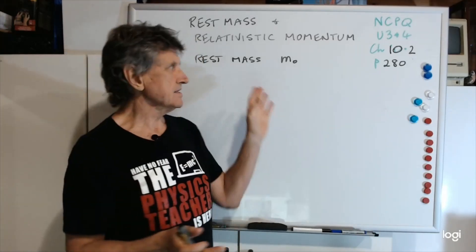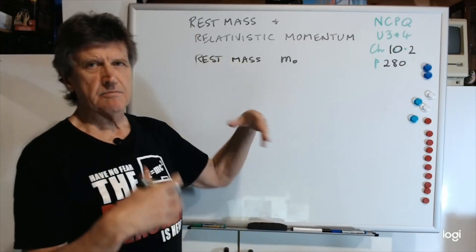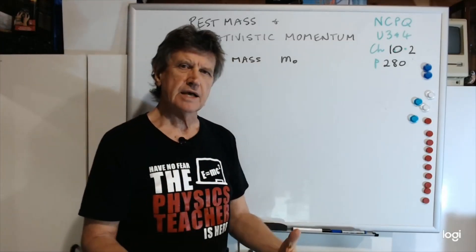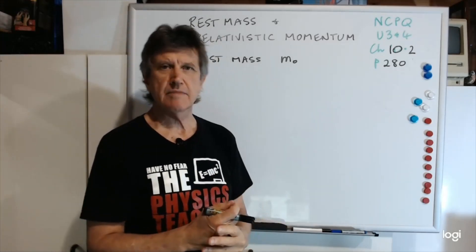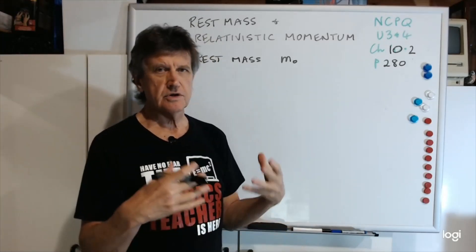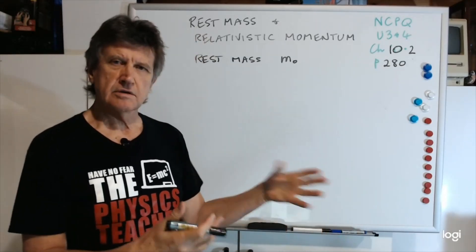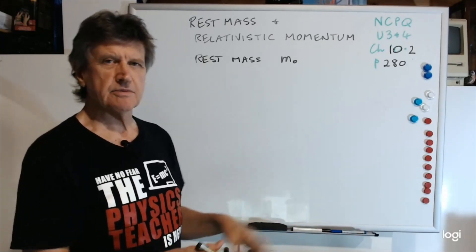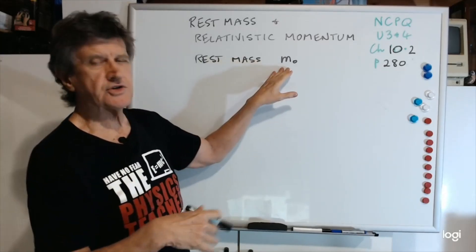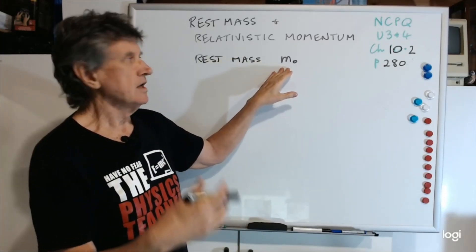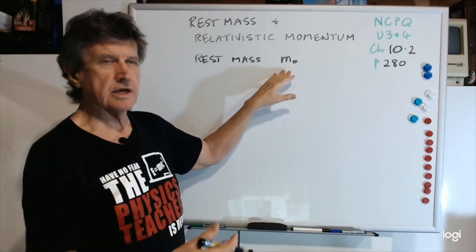Relativistic mass is not something in the syllabus. They use the term rest mass, but there is no change in mass when it moves at a higher speed. So forget about anything to do with relativistic mass. As far as you're concerned, in the syllabus, it doesn't happen. Einstein wept at the idea that people were talking about relativistic mass. So there is only one mass, and that's rest mass. That's the mass you measure in the laboratory when you're at rest to it, or if you could somehow measure the mass as it's moving, you'd still get the same value.